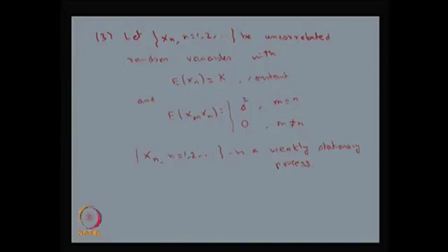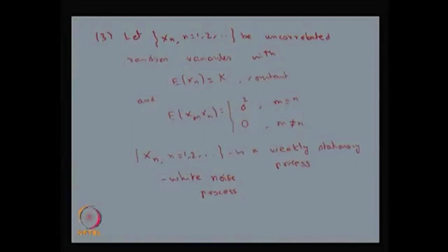This stochastic process is also called the white noise process. It is very important in signal processing: you keep uncorrelated random variables with the assumption that the mean is a constant (which may be 0) and the product expectation takes those values. This is a weakly stationary process in the sense that it satisfies all three conditions of the wide sense stationary process. This stochastic process is called the white noise process.